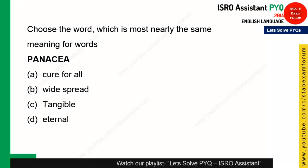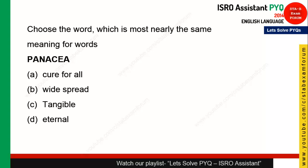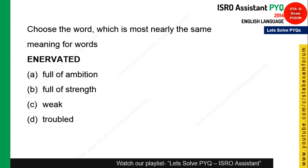The next question is also from synonyms and the word is 'panacea.' The meaning of panacea is 'cure for all.' It is a cure for all conditions — whatever suggestion or advice, it will be a panacea for that situation. So option A is the correct answer.